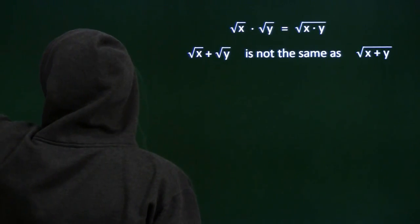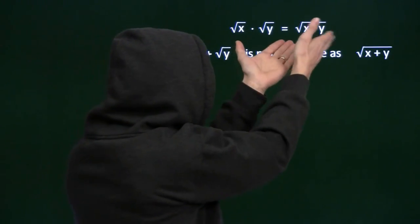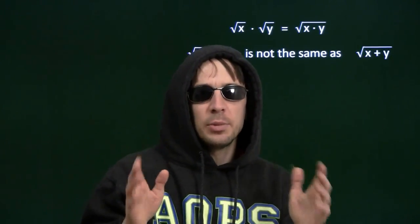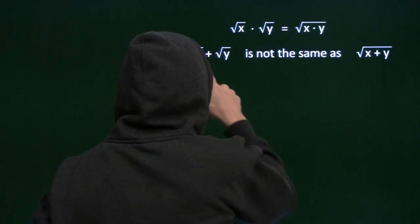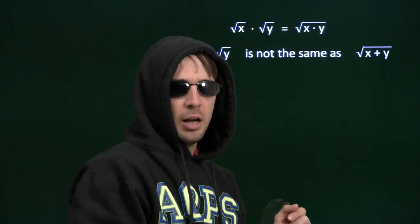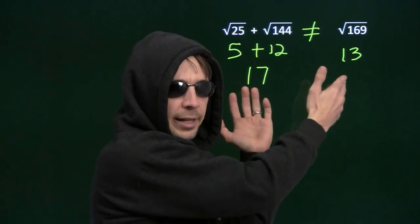So here's the key point. We can take this product of square roots and we can write it as the square root of product. We can't do the same thing with sums. Over here we have the sum of square roots is not the same thing as the square root of this sum because 17 is not 13.